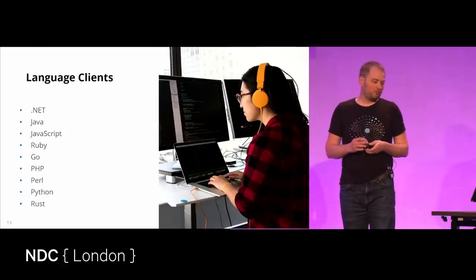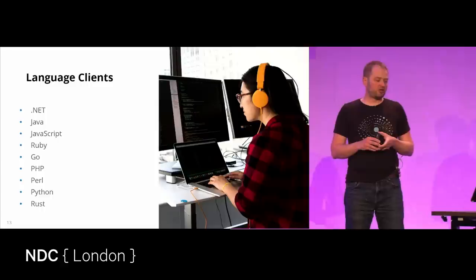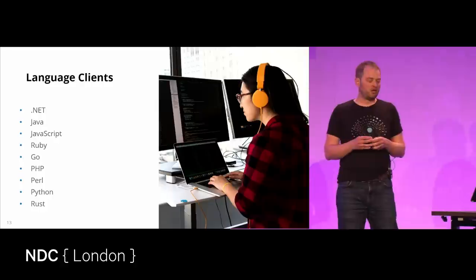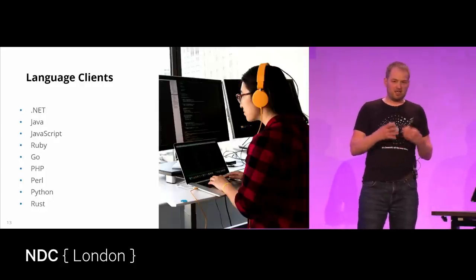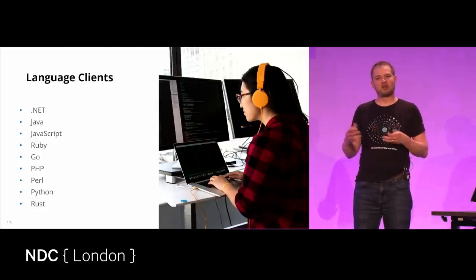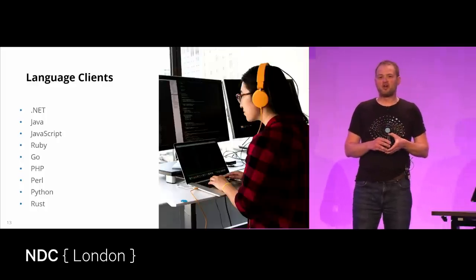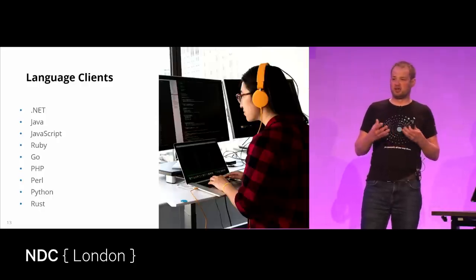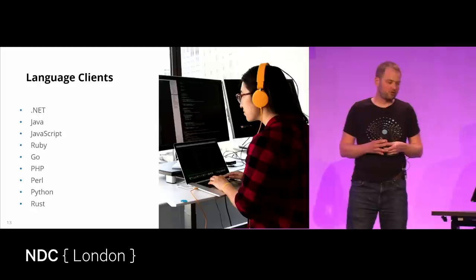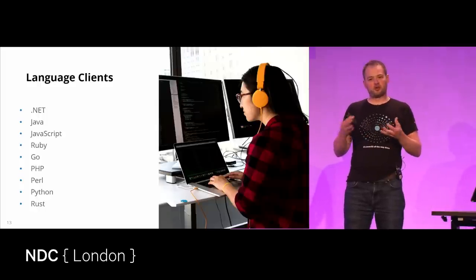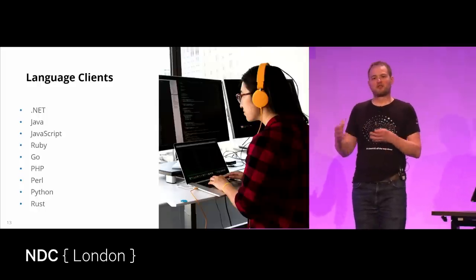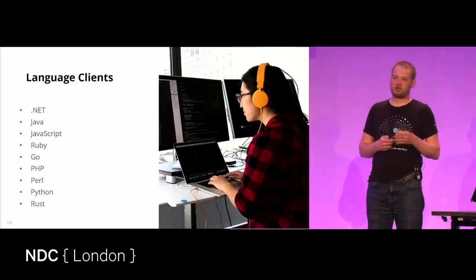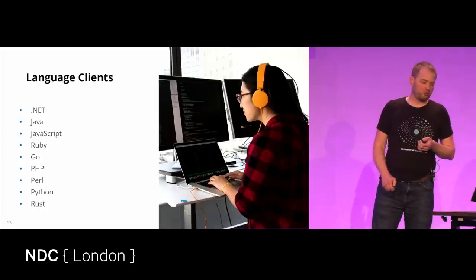I work on the language clients team — about eight or nine of us maintaining clients for all the core languages. Each client is designed to be idiomatic to its language. Java and .NET are the most strongly typed clients — we provide classes representing requests and responses so you can work with data in a pattern you're used to. Other languages are designed with their own patterns and conventions, so you should find them compatible with what you've seen elsewhere.